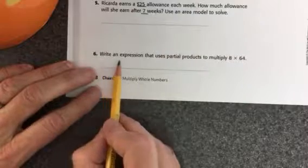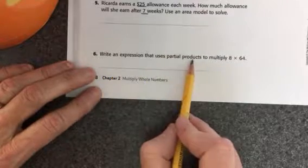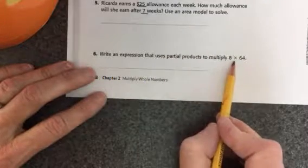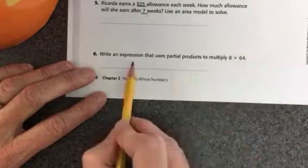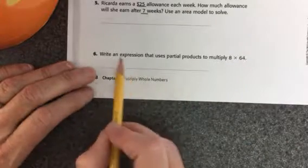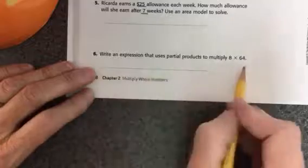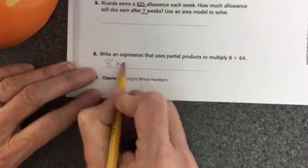Number six. Write an expression that uses partial products to multiply 8 times 64. Okay, writing an expression means to write 8 times 64. That is an expression.